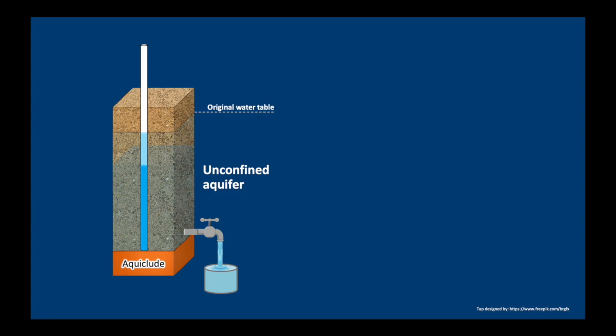Now, if we start pumping water from this aquifer, which means we're extracting water, the water table will drop by a certain amount. This means that in unconfined aquifers, groundwater is released from storage by dewatering of the aquifer.